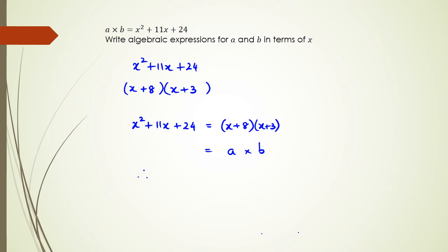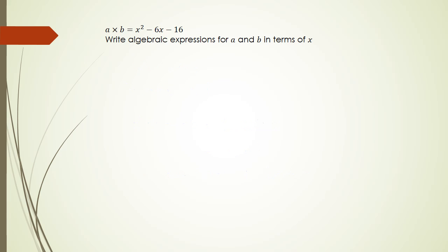This is the same as a times b, so we can say a equals x plus 8 and b equals x plus 3. It doesn't matter which one you write as a and b, as long as you write that a equals one of those factors.